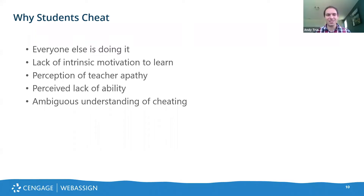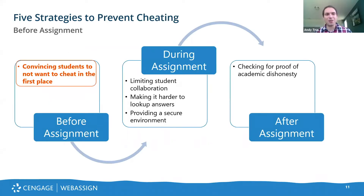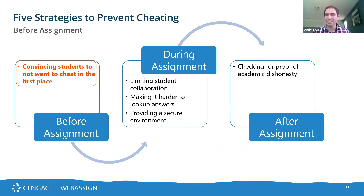And finally, not all students actually have a clear understanding of what cheating is. Most students would know you shouldn't directly copy off another student for a final exam, but beyond that there's a lot of gray area that can be confusing. This session will cover different strategies to prevent academic dishonesty. We'll think about this from the framework of first, what strategies in WebAssign can convince students not to want to cheat in the first place; then once the assignment has begun, what can limit students from working together or looking up answers; and after the fact, tools available in WebAssign to assess if a student actually cheated.